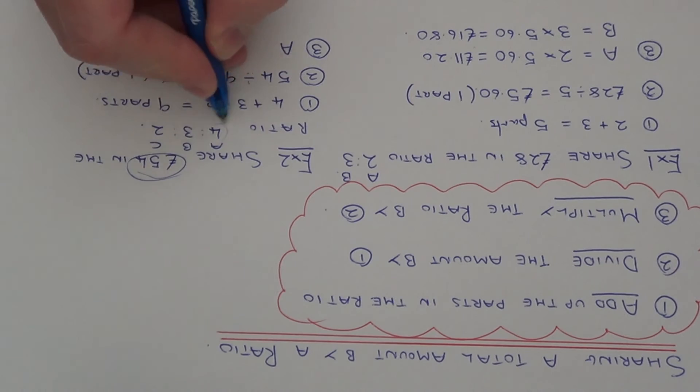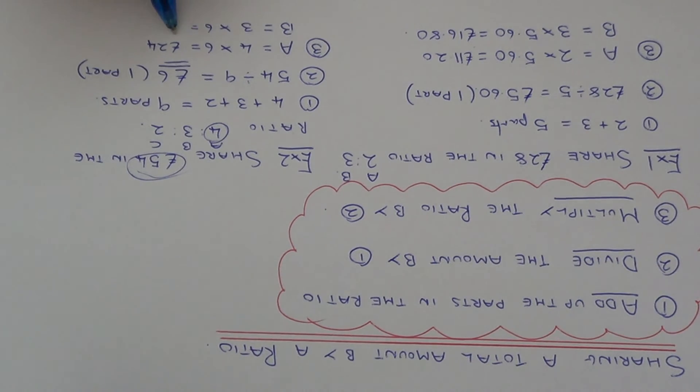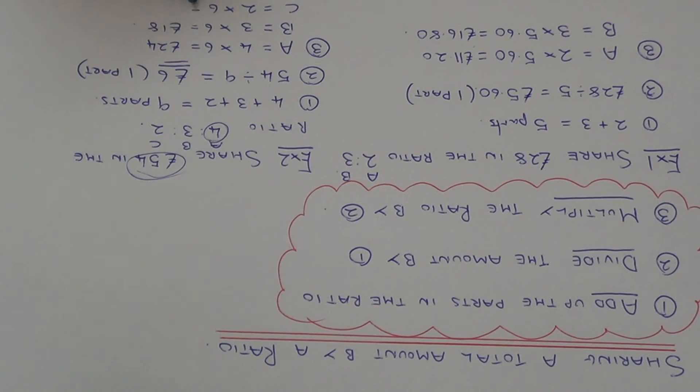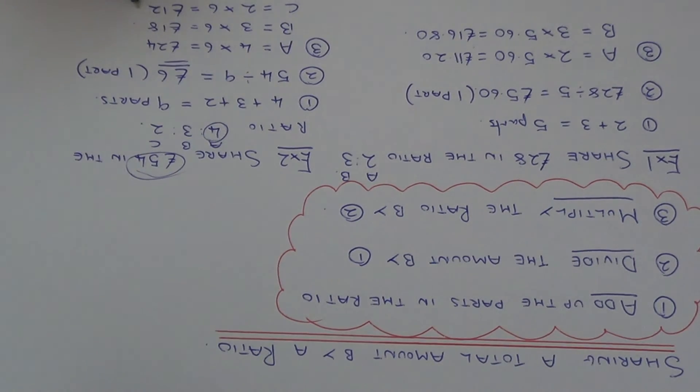So person A is getting four parts of the money. So we do four times six which is £24.00. Person B is getting three parts of the money. So we do three times six which is £18.00. And person C is getting two parts of the money. So two times six is £12.00.